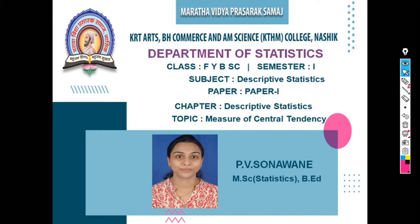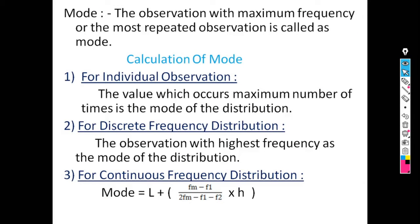Median is the middlemost observation, or the observation which divides the series into two equal parts, is known as the median. Then we saw mode. Mode is the observation with maximum frequency, or the most repeated observation, is known as mode. Then we saw calculation of mode for different types of data.